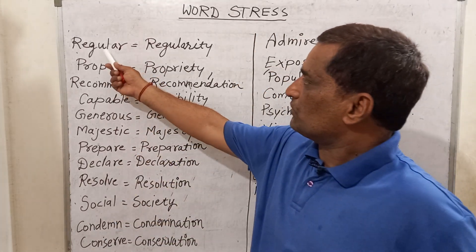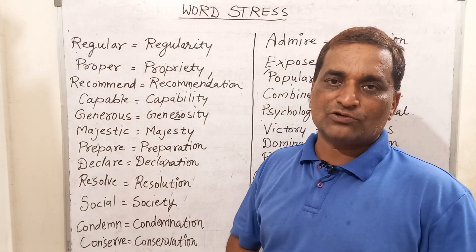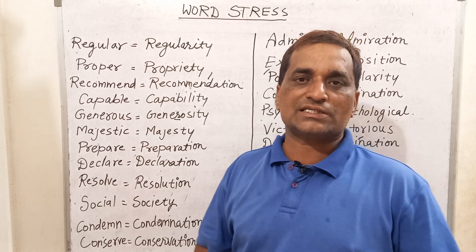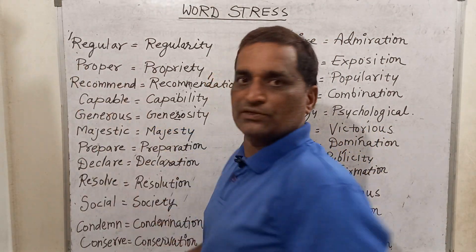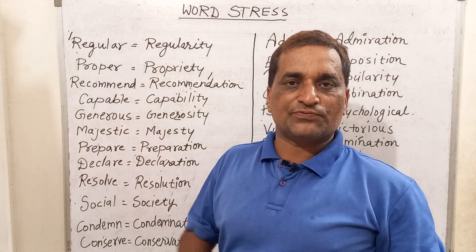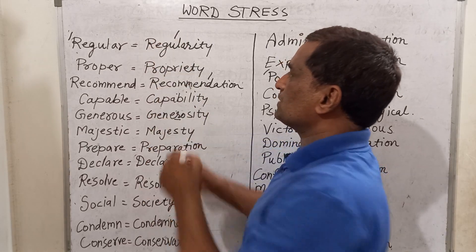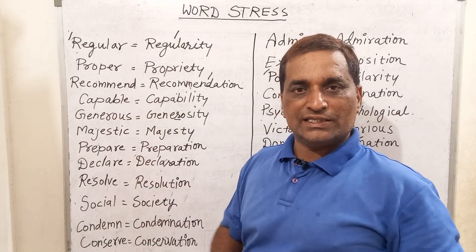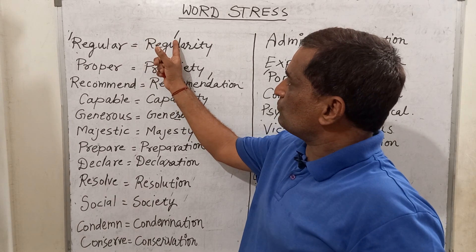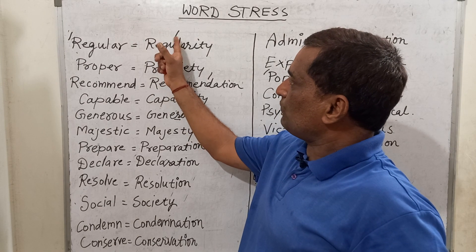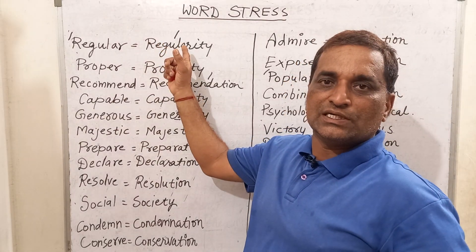The first word is 'regular'. We will have to put some stress, and the stress will come before R — 'regular'. There is great force on R when I pronounce it. And for 'regularity', the stress will come before L — 'regular', 'regularity'. This stress shows that the letter following this sign should be pronounced with great force.